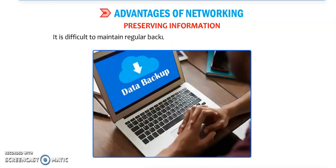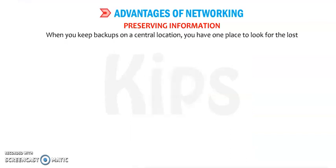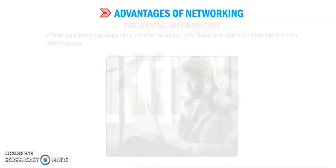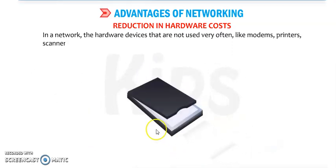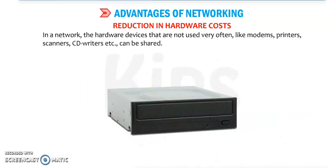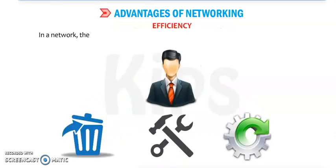Next is preserving information — we can save our information very safely. It is difficult to maintain regular backups on a number of standalone computers. That's why when you keep backups on a central location, you have one place to look for the lost information. We can retrieve our information from the main server. Next is reduction in hardware cost. In the network, hardware devices that are not used very often — like modern printers, scanners, CD writers, etc. — can be shared. We don't need so many printers for every computer, which reduces the cost of hardware.